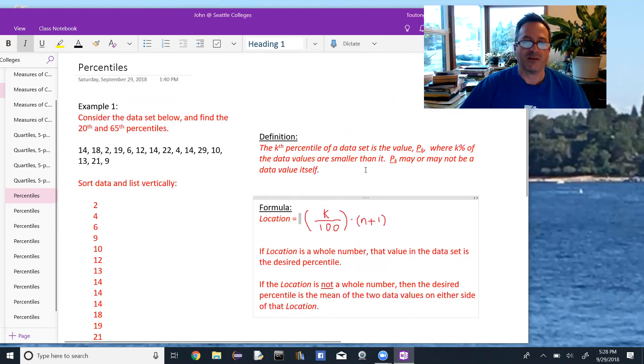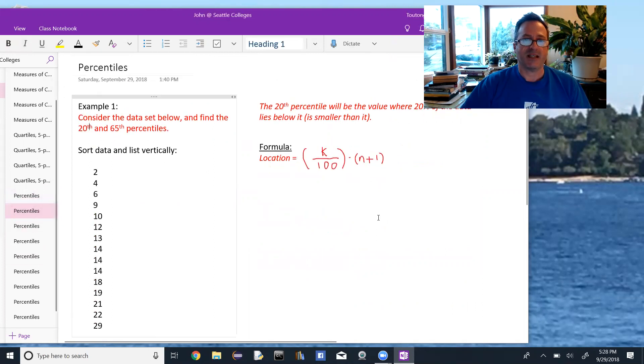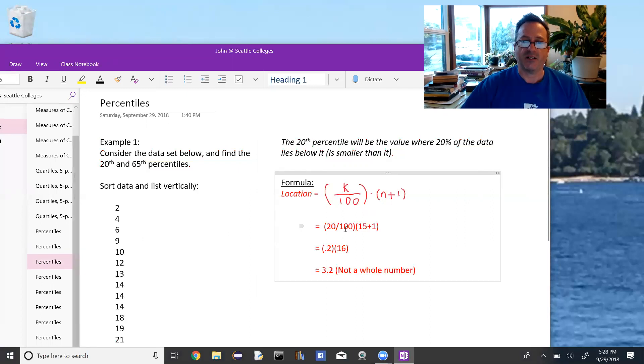So back to our example, we're looking for the 20th percentile of this data set. The 20th percentile would be the value where 20% of the data lies below it or is smaller than it, and again, we're going to use the same formula to find the location k over 100 times n plus one. In this case, k is 20 and n is 15. So we get 20 over 100 times 15 plus one, or 0.2 times 16, which is 3.2.